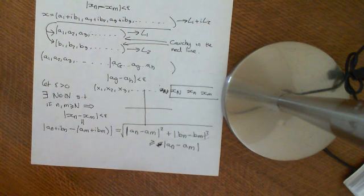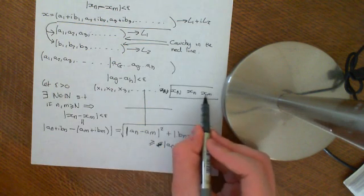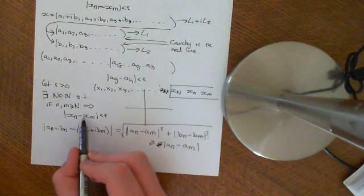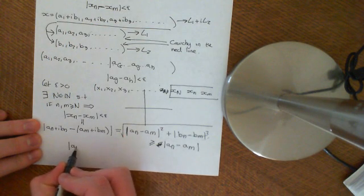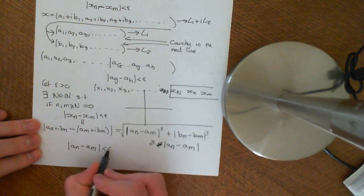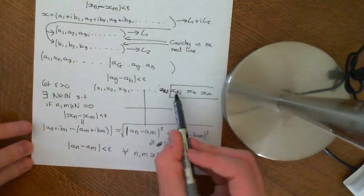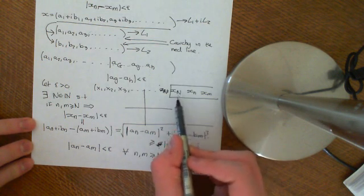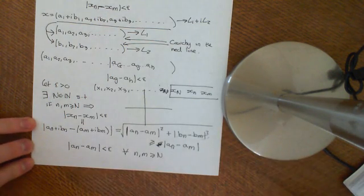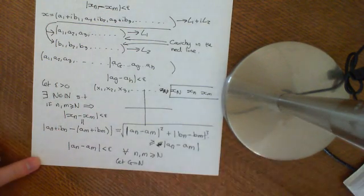So if I can assure you that beyond big N, the modulus of xn minus xm is less than epsilon, and since |An − Am| is less than or equal to that modulus, by transitivity of the real ordering, |An − Am| must also be less than epsilon for all n, m greater than or equal to N. So we just let big G equal big N, and we're done.